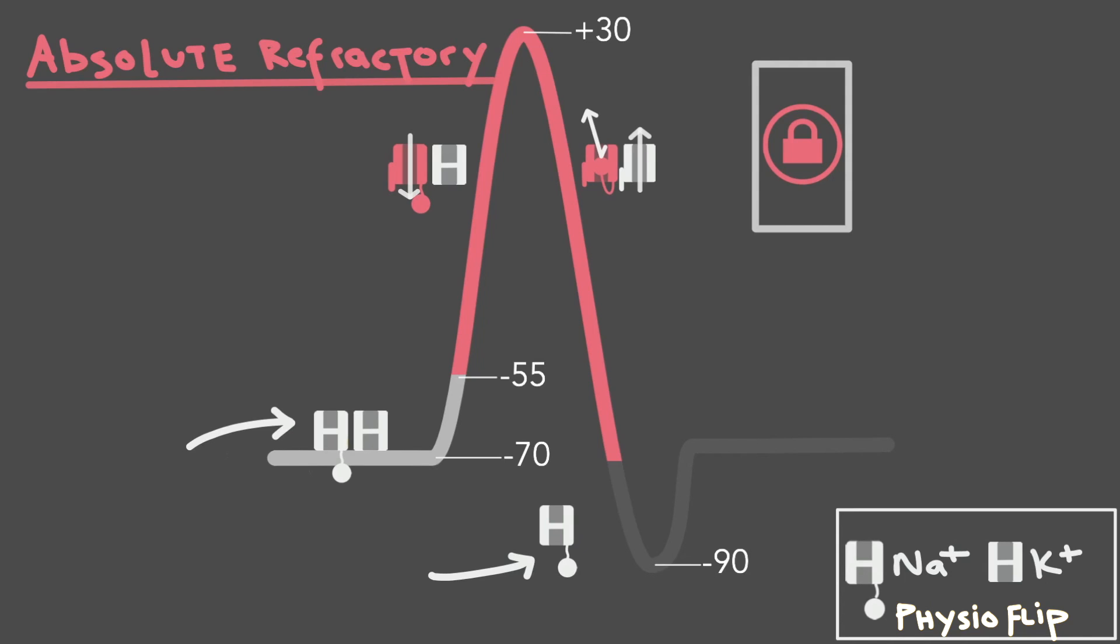But while we can start another action potential, it's going to be a bit harder than normal. This is because the voltage-gated potassium channels have remained open, allowing more potassium to continue to leave the cell, making the cell hyperpolarized or even more negative than the resting state. Eventually, all voltage-gated channels do close though and reset to their original shape as a result of this hyperpolarized negative state. During this entire region I highlighted in white, the hyperpolarized region, it is possible to start another action potential, but it will be harder than normal. Here's why.